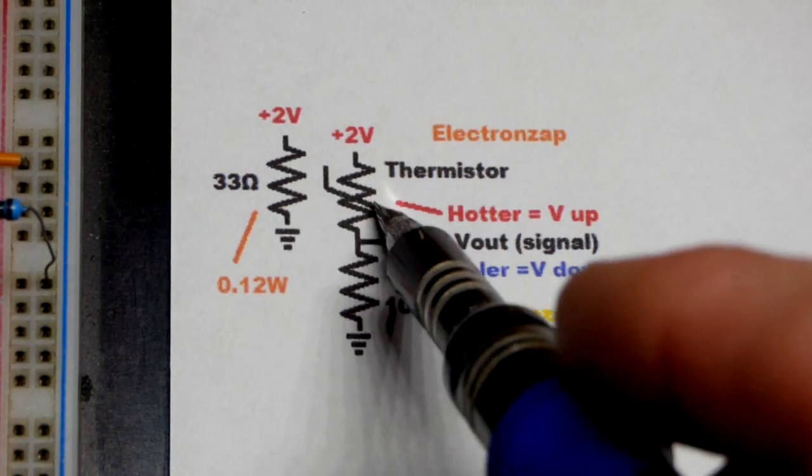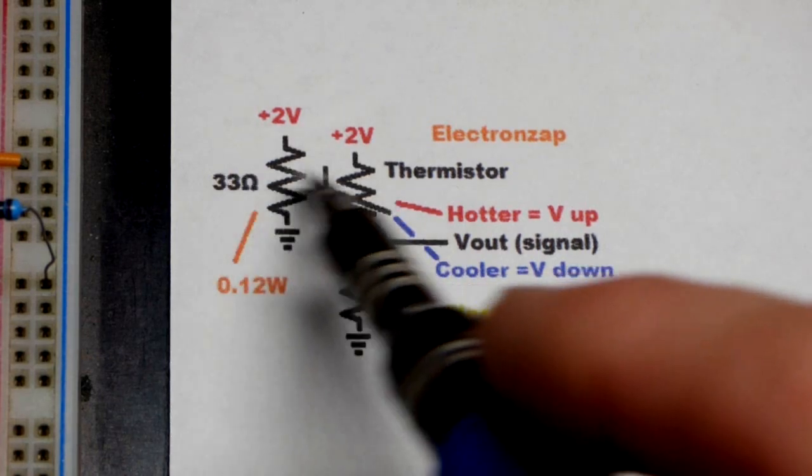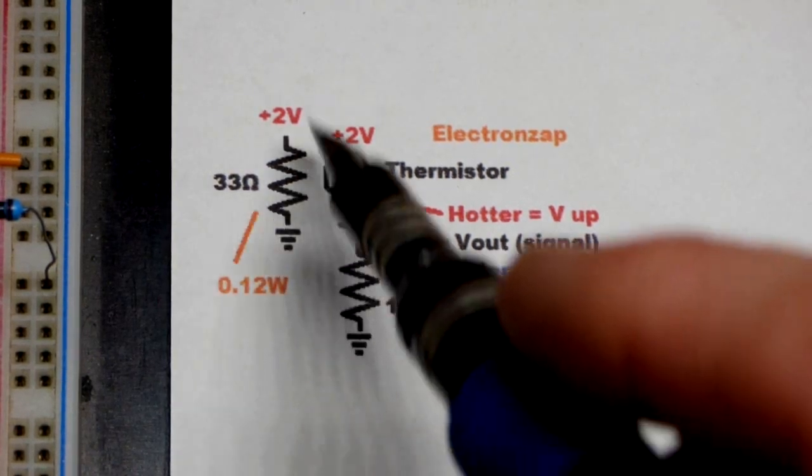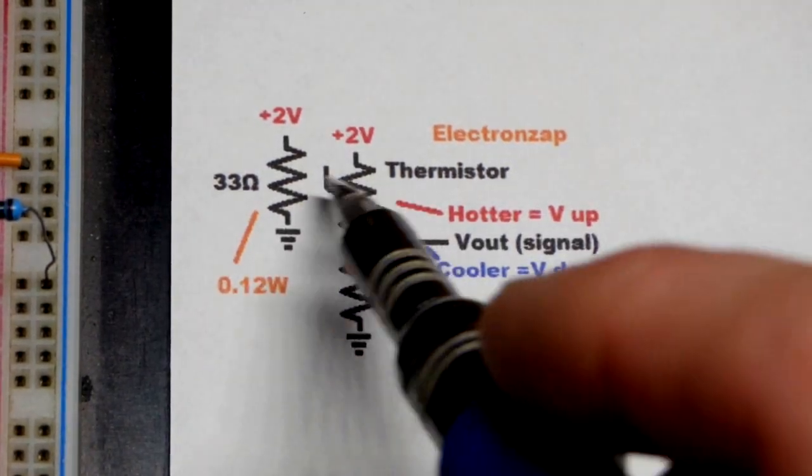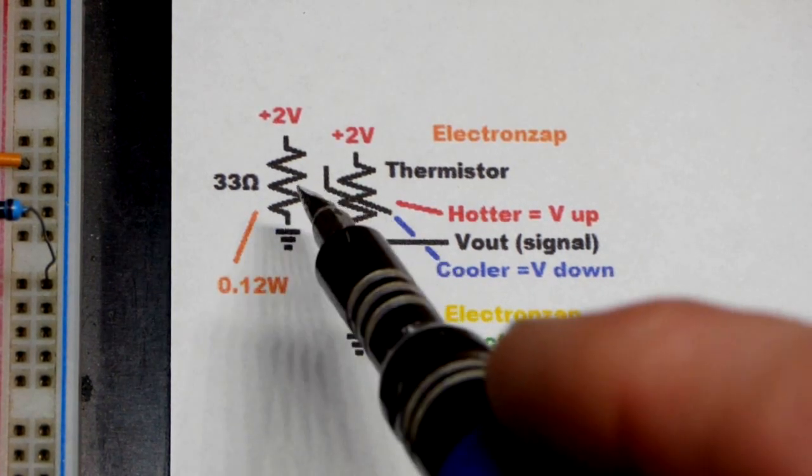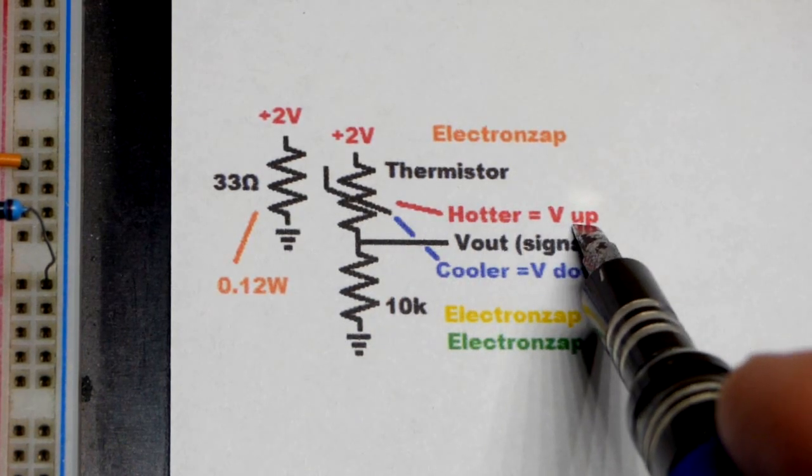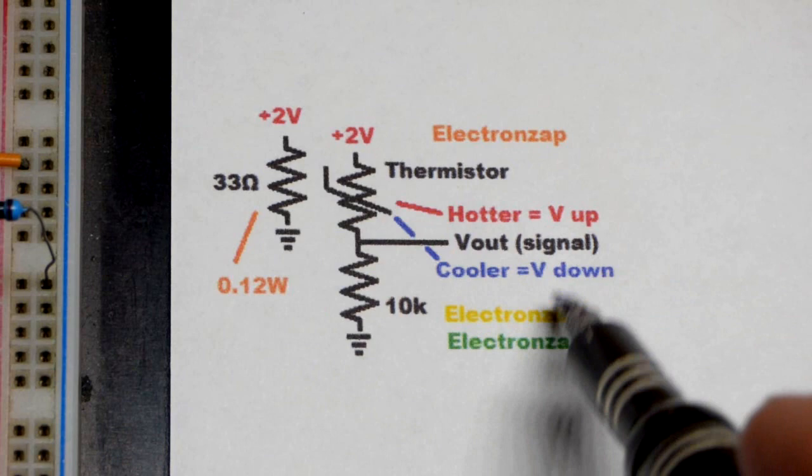A thermistor is a type of resistor whose resistance changes based on the temperature. When it gets hotter, such as when current's flowing through a resistor and it's touching that resistor (they need to be touching; thermal paste would make it work even better), then it has less resistance and thus as a voltage divider the voltage will go up.